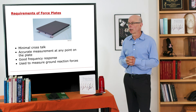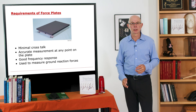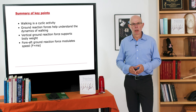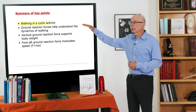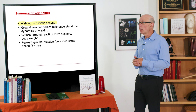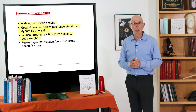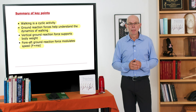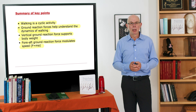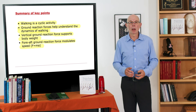To summarize the key points: walking is a cyclic activity and we use the gait cycle to characterize it. Ground reaction forces are very helpful for understanding the dynamics of walking — the vertical ground reaction force supports body weight, and the fore-aft ground reaction force modulates speed. We understand this through Newton's second law, F = ma. By measuring forces, we know a great deal about the accelerations of the mass center, which will be critical when we write equations calculating mass center accelerations, velocities, positions, and energy in walking in the next lecture.